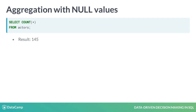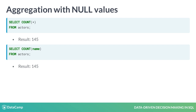SELECT COUNT(*) counts the number of rows of the selected table actors. The result is 145. Applying the function COUNT to a column returns the number of not-null values in that column. We get the same result when we count the number of entries in the column name, since there are no null values in this column.